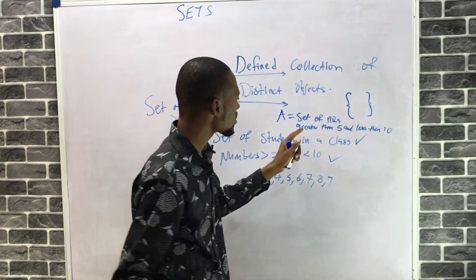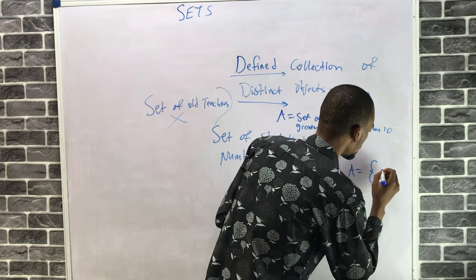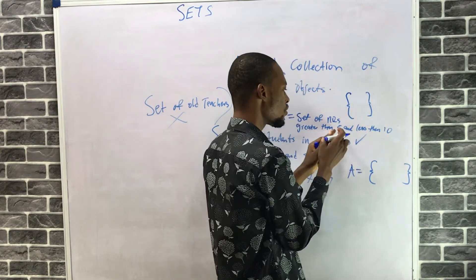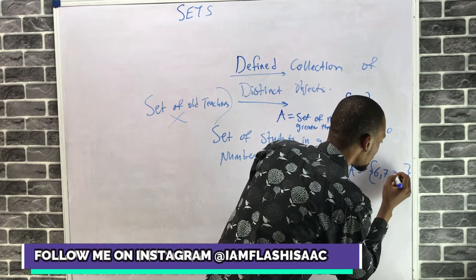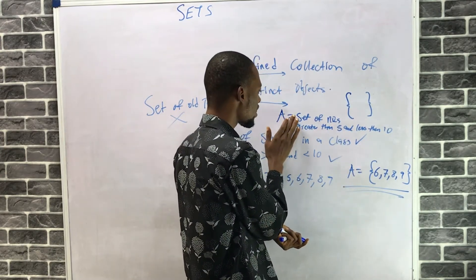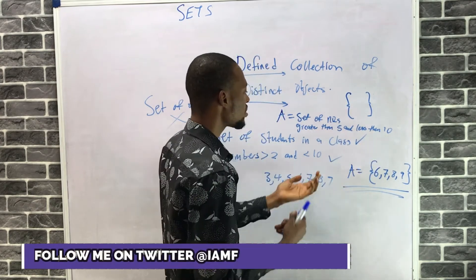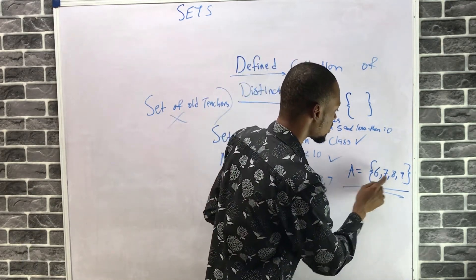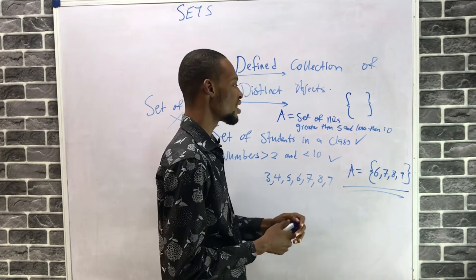For the set of numbers greater than 5 and less than 10: 5 itself is not greater than 5, so we start from 6. Therefore, the set is {6, 7, 8, 9}. You can label your set with any capital letter — S, T, or A — followed by curly brackets containing the elements.